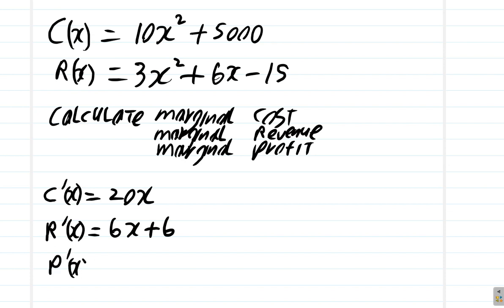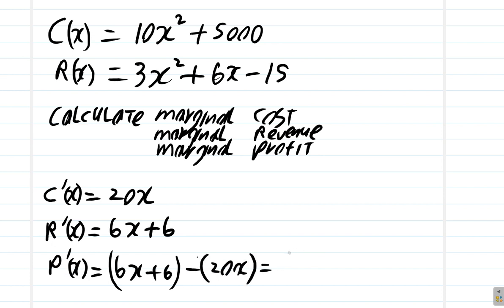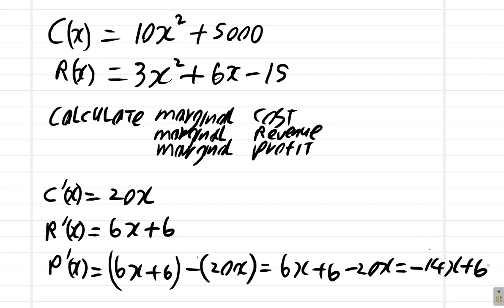P prime of x: profit is revenue minus cost, which is 6x plus 6 minus 20x. So 6x minus 20x would be negative 14x, giving us negative 14x plus 6. That's the function for the marginal profit.